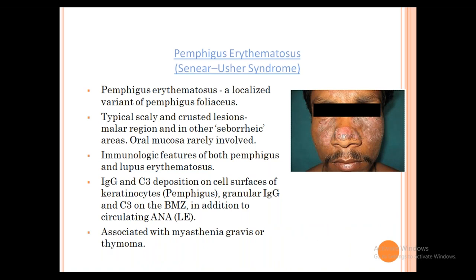Pemphigus Erythematosus (Senear-Usher syndrome) is a localized variant of Pemphigus Foliaceus affecting the malar area — typically scaly, crusted lesions in malar or seborrheic areas. Oral areas are rarely involved. Immunologically, you find features of both Pemphigus and Lupus Erythematosus: IgG and IgM deposits on keratinocyte surfaces, granular IgM and C3 on the basement membrane zone, and ANA may be positive. Associated with myasthenia gravis or thymoma.